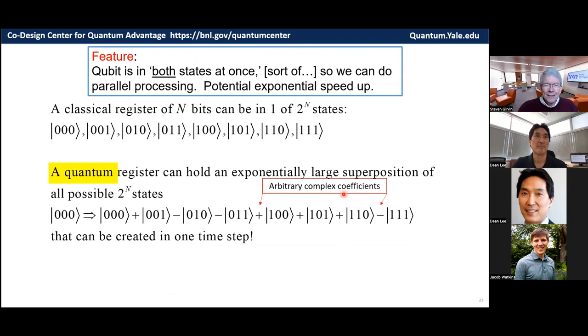And to illustrate this, so here's a register of three bits, and here are the bit values. If it were a classical register, these would be the two to the three equals eight states of the register. But a quantum register can be in a giant superposition of all these possibilities at the same time, and there are quantum amplitudes, complex numbers, that go in front of these. Here, I'm just illustrating them with pluses and minuses. So, a quantum register can hold an exponentially large superposition of all these states. And furthermore, you can make this superposition in a single time step on the computer. So, it's extremely powerful possibility.